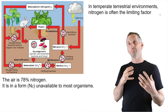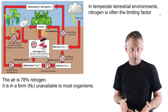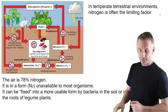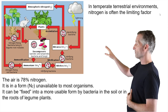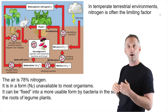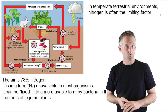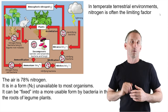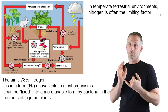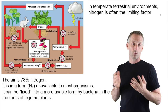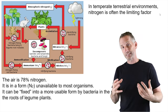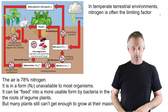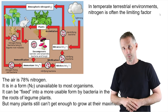The way nitrogen can be changed into something usable by other organisms is basically through what's called nitrogen-fixing bacteria. Atmospheric nitrogen, N2, can be fixed into more usable forms by bacteria in the soil or in the root nodules of legume plants — things like peas, beans, alfalfa, and similar plants. This nitrogen-fixing in root nodules or in soil bacteria does fix a significant amount of nitrogen, but it's still not enough to allow plants to grow at their maximum in many environments.